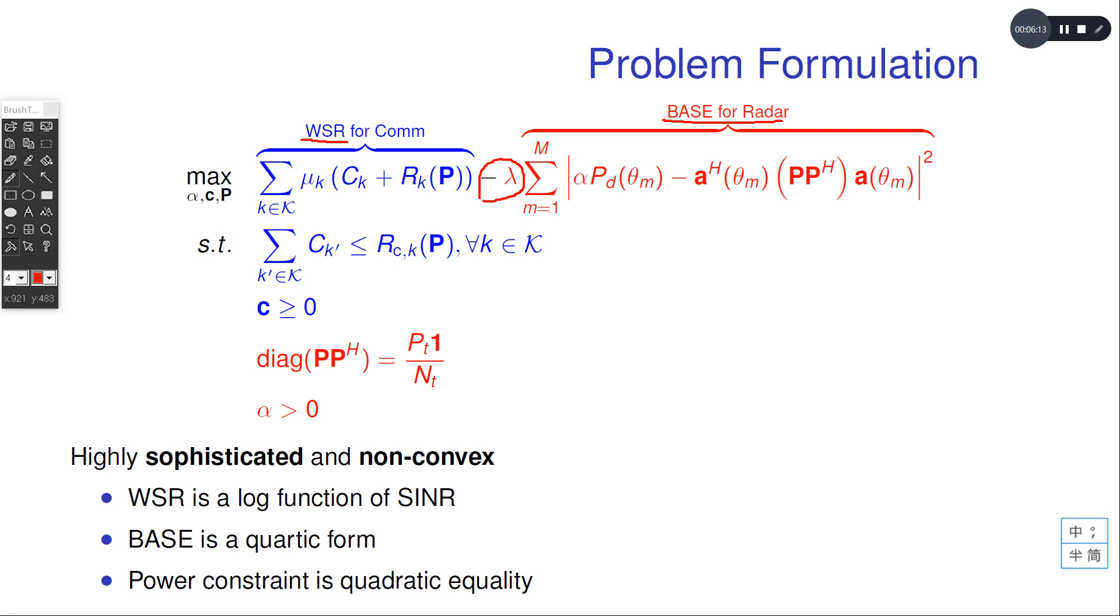We can see clearly in this problem that it is highly non-convex and very difficult to solve. This is because the objective function contains a sum of log function and also a quadratic form.